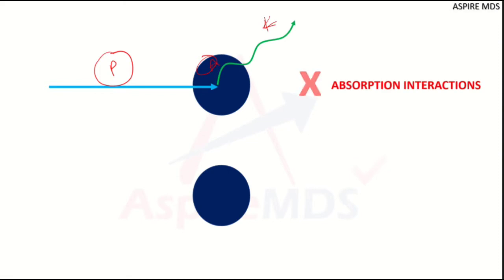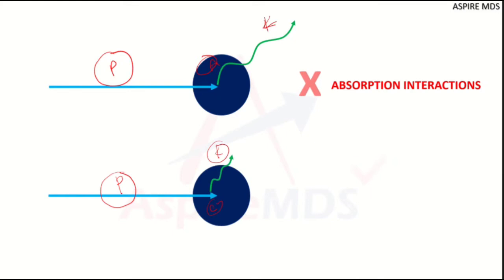In another kind of interaction, when a photon interacts with an electron in the atom, it does not give up all of its energy — it gives only some of the energy. This portion is converted to the kinetic energy of the electron, while the remaining energy stays with the photon. However, the direction of the photon is changed, meaning the photon is now scattered. This kind of interaction is known as a scattering interaction.